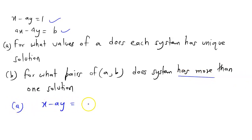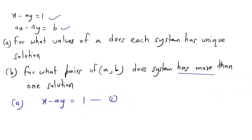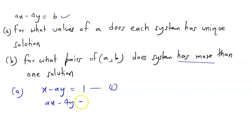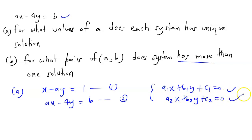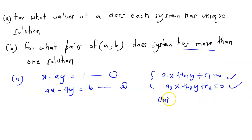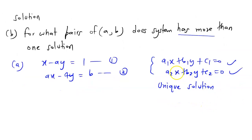Equation number 1 is x minus ay equals 1, and equation number 2 is ax minus 4y equals b. For the first case, we are asked for what values of a the system has a unique solution. If our equations are a1x plus b1y plus c1 equals 0 and a2x plus b2y plus c2 equals 0 — these are linear equations in two variables — for a unique solution, the lines intersect at one point, so the condition is a1 divided by a2 is not equal to b1 divided by b2.